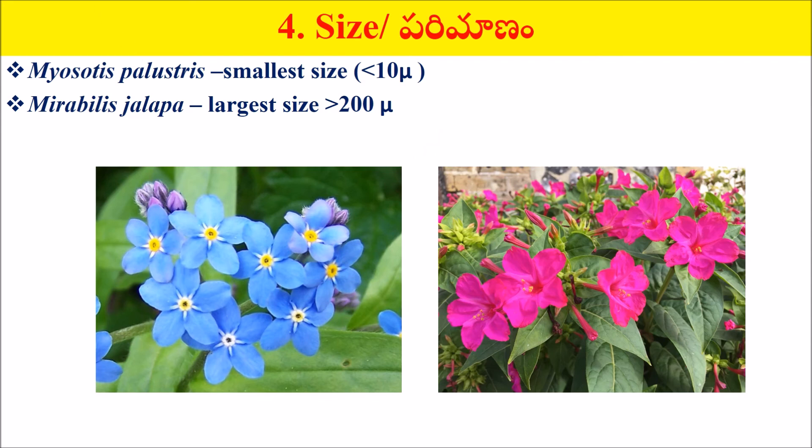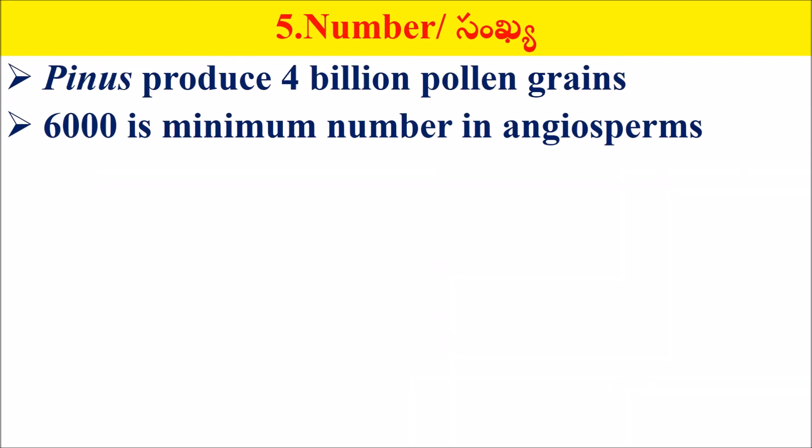Next, the number of pollen grains. Pinus produces 4 billion pollen grains per tree. Average minimum number in angiosperms is around 6,000 pollen grains.